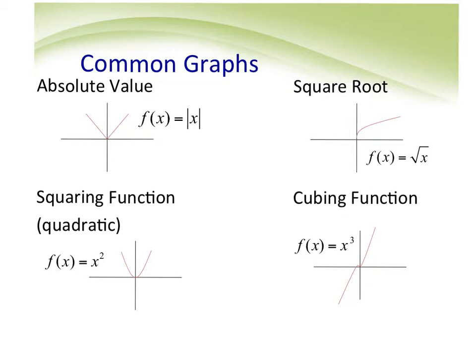This section is called transforming functions, so all these graphs should pass the vertical line test — otherwise it's not a function. You won't get a sideways V because that would fail the vertical line test — that would be y as an absolute value. You're always going to see f(x) equals something, and all of these graphs should pass the vertical line test.